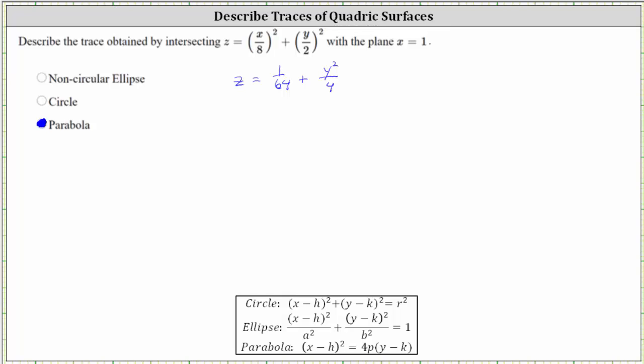But again, let's practice writing the equation in the form of a parabola shown below. Notice how we do want the squared term on the left and the linear term on the right. So let's write the given equation as y squared divided by 4 plus 1/64 equals z.